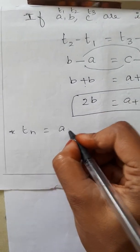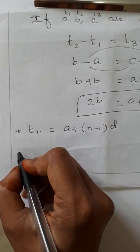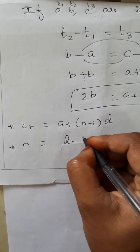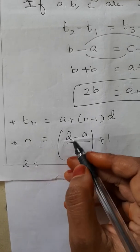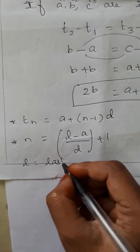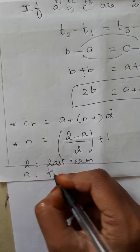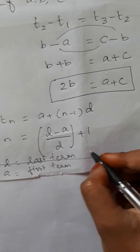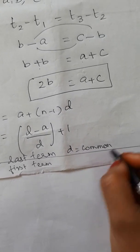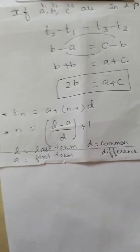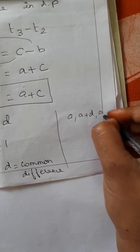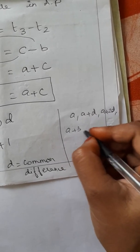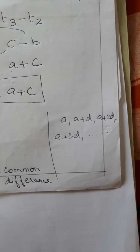The nth term formula is A plus (N minus 1) into D. The general form of an AP is A, A plus D, A plus 2D, A plus 3D, etc. Okay, clear?